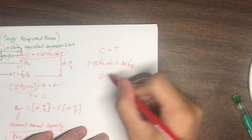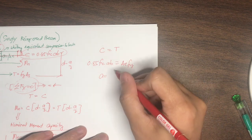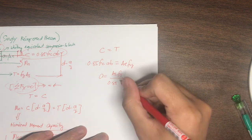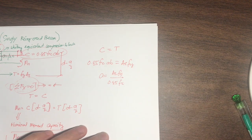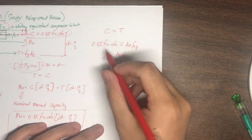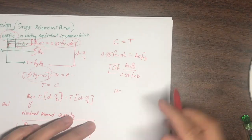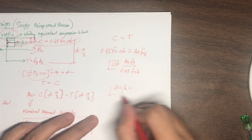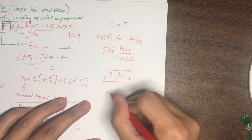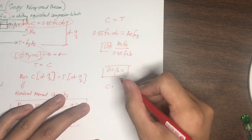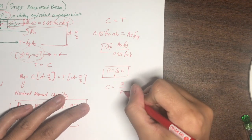After determining A, we know that A equals beta1 times c. Therefore, c equals A divided by beta1, giving us the location of the neutral axis from the outermost compression fiber.